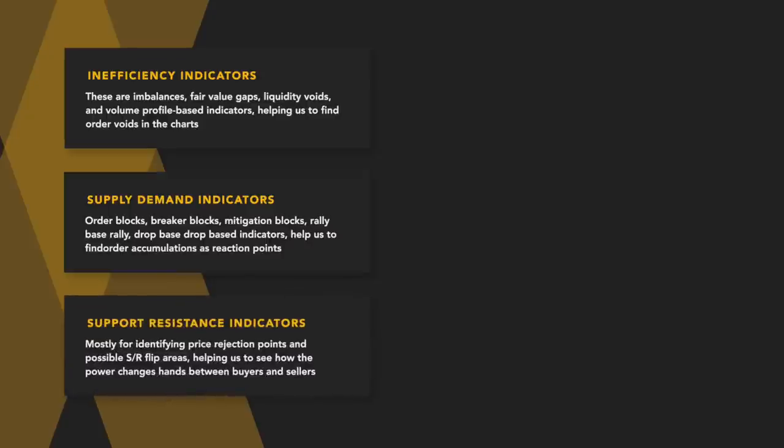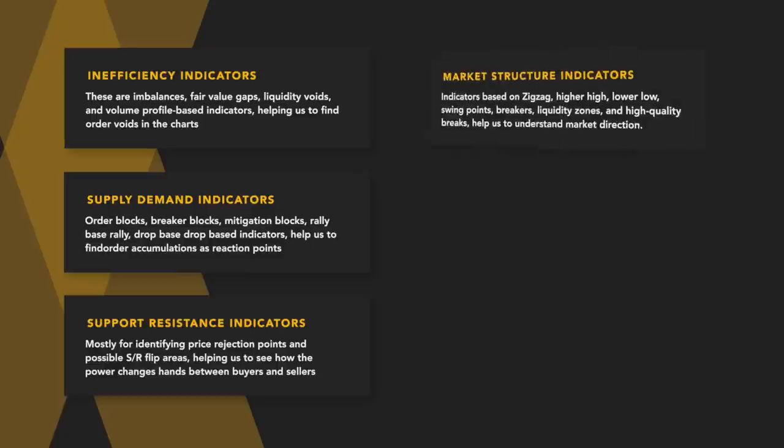Third, support and resistance indicators, mostly for identifying price rejection points and possible SR flip areas, helping us to see how power changes hands between buyers and sellers. Fourth, market structure indicators — indicators based on zig-zag, higher high, lower low, swing points, breakers, liquidity zones, and high quality breaks, which help us understand market and trend direction.